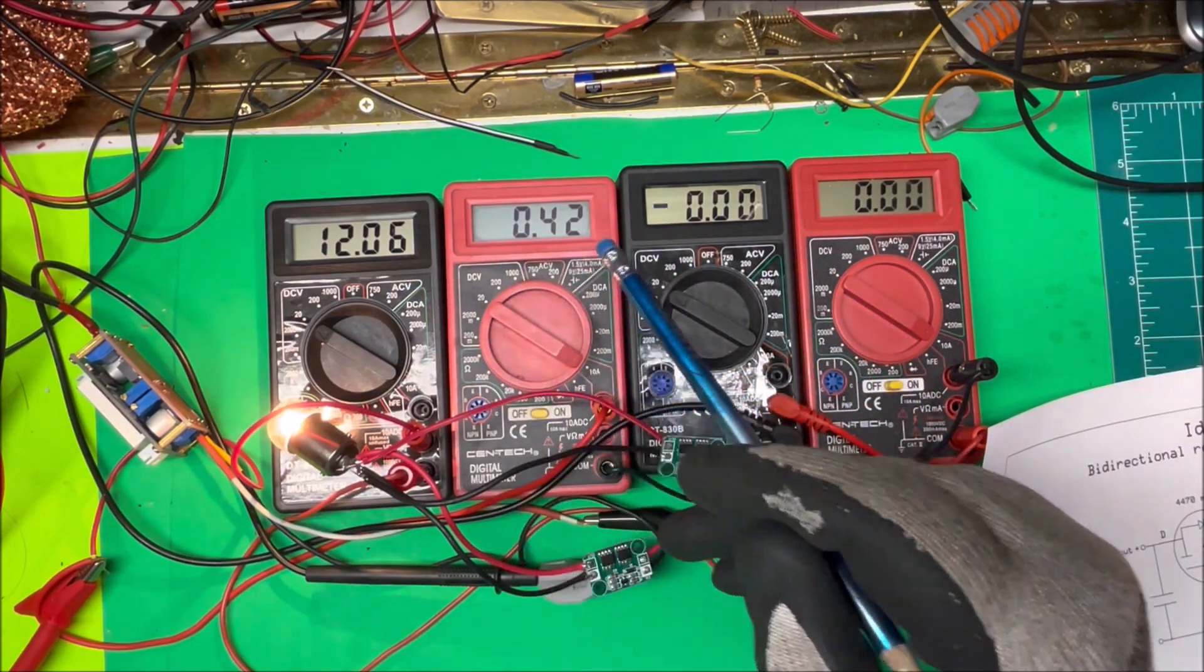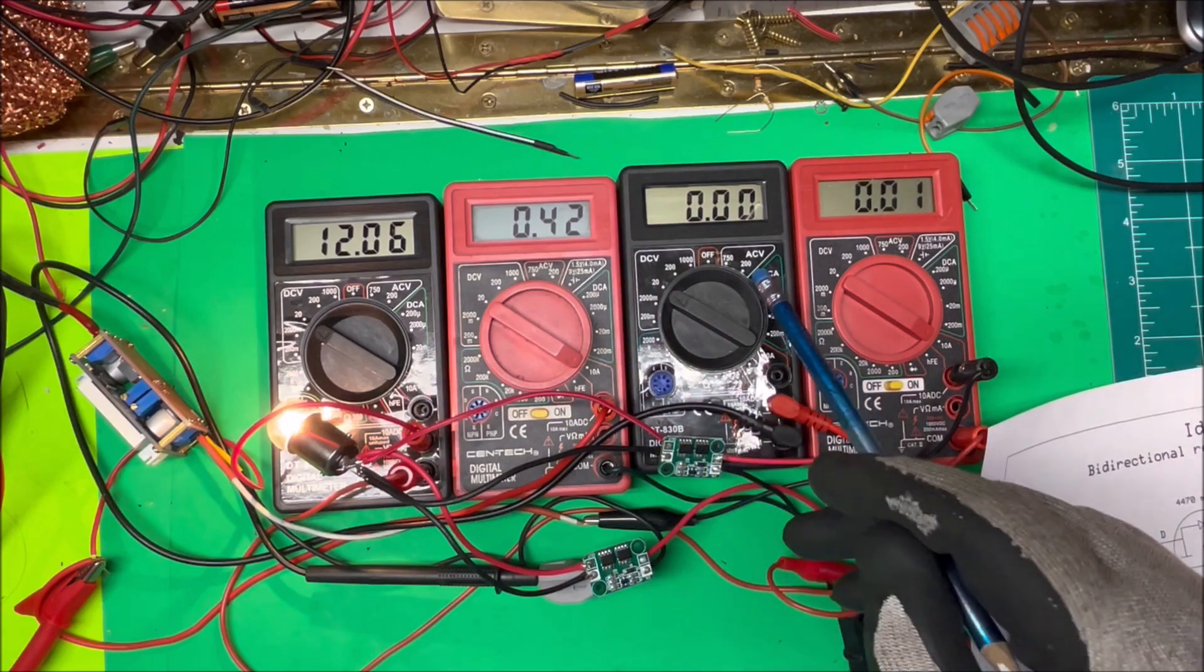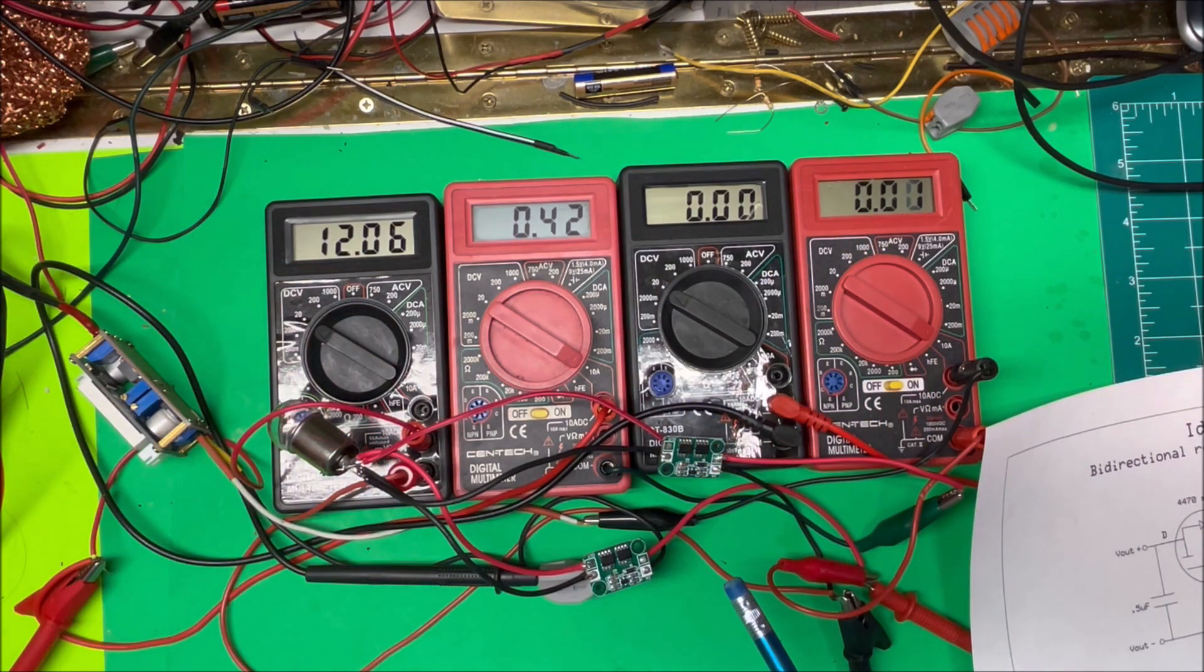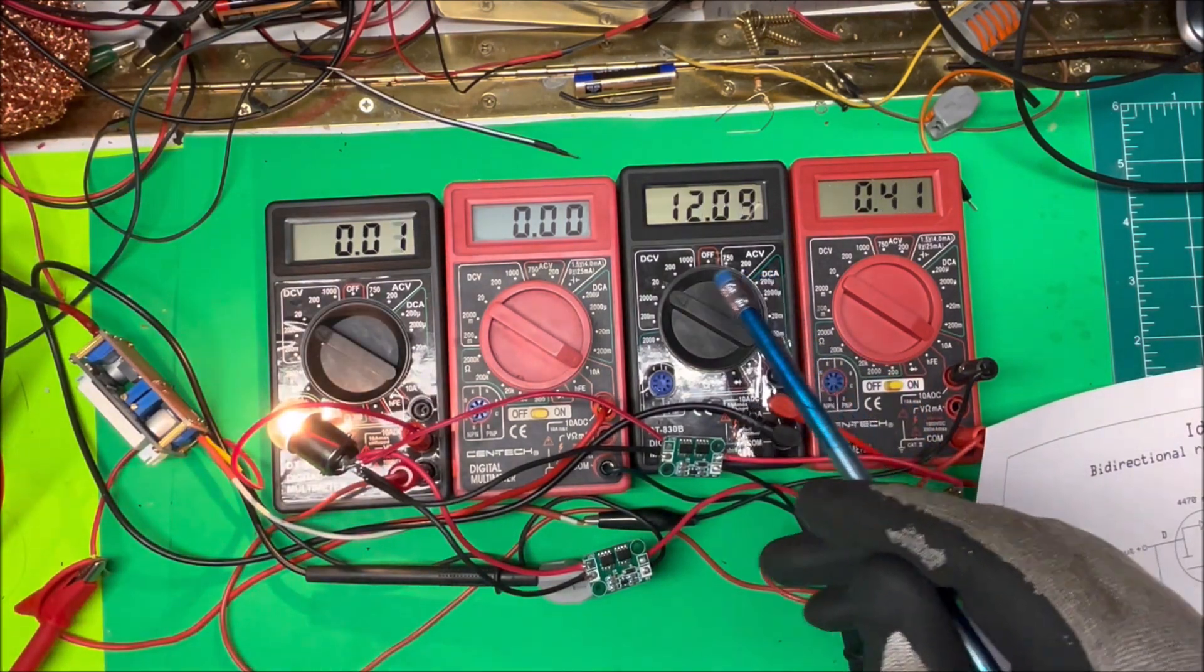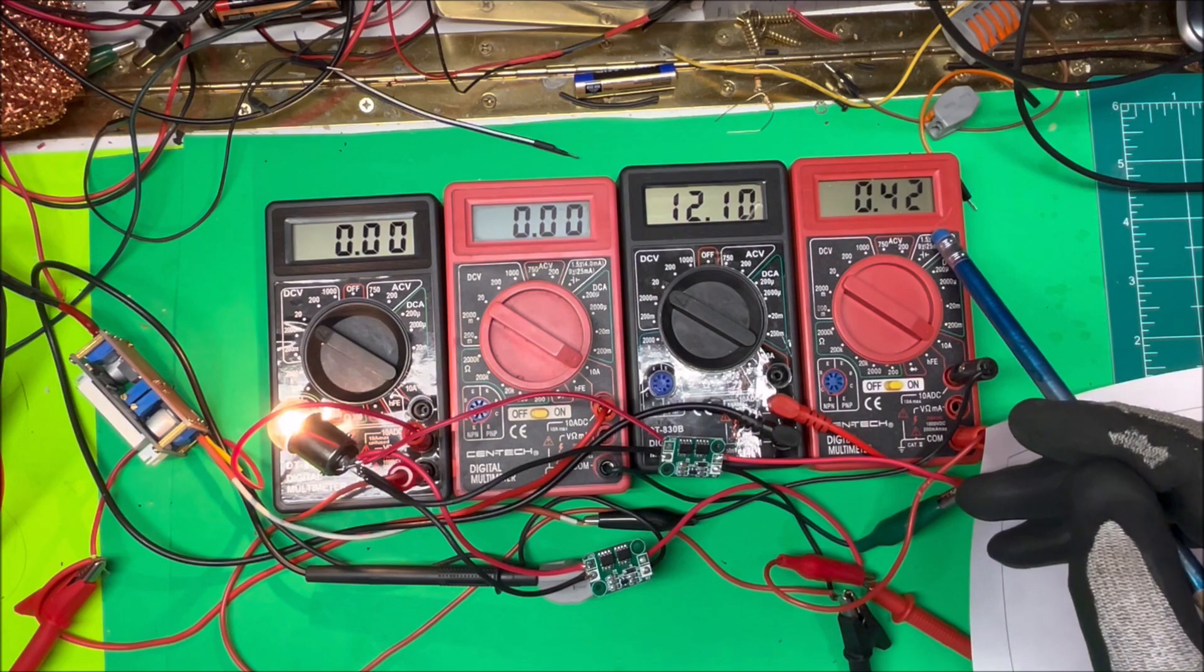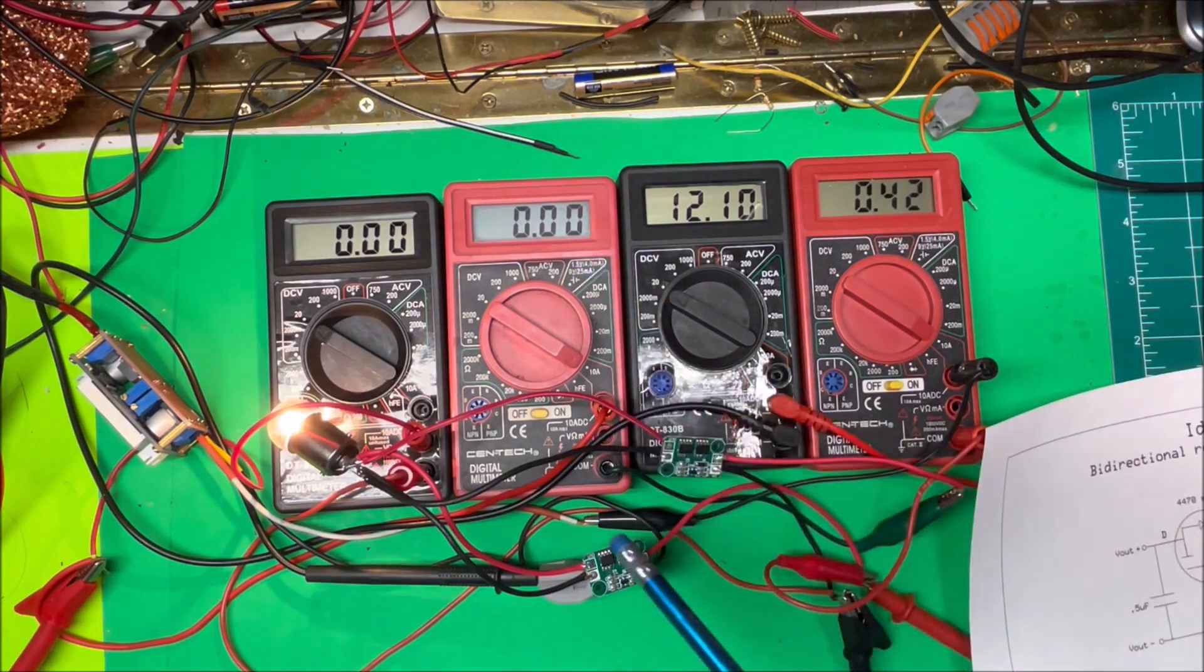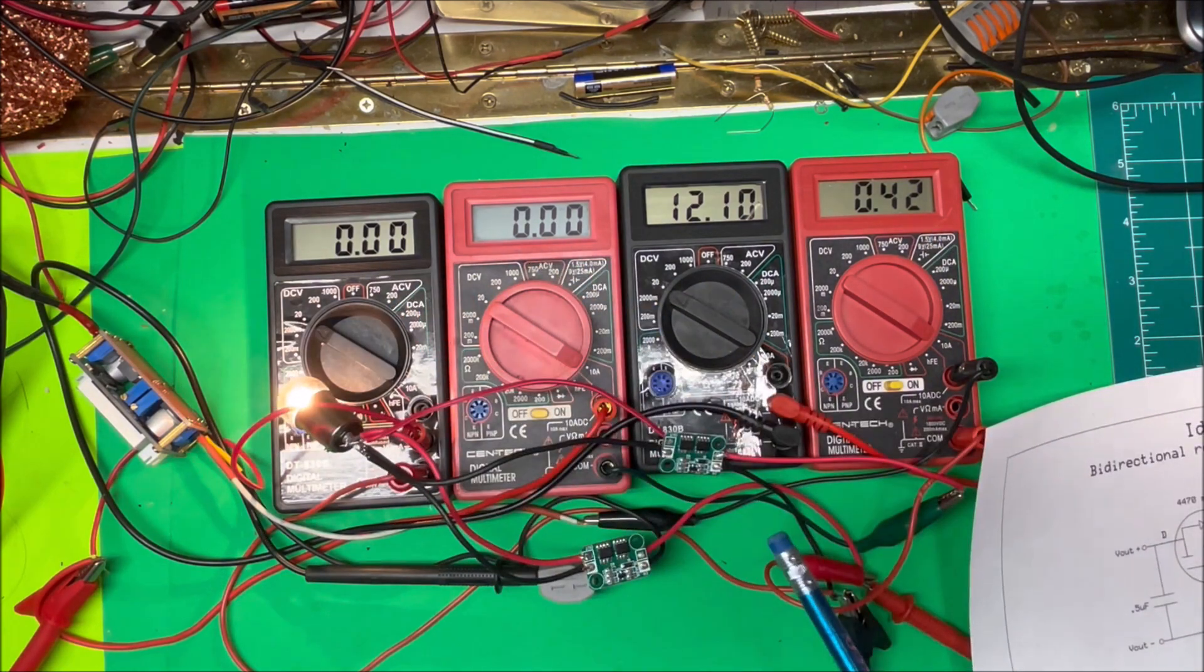12 volts here, I've got current running through this one and nothing on the other side there. I'll turn that one off and we'll turn this one on over here. I got 12 volts here, 0.42 amps going through there and nothing coming back through the other diode. So that's working fine.